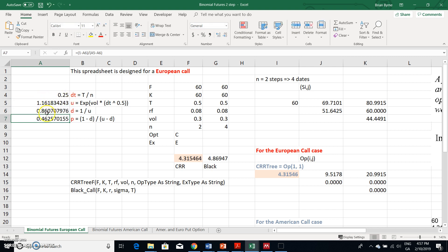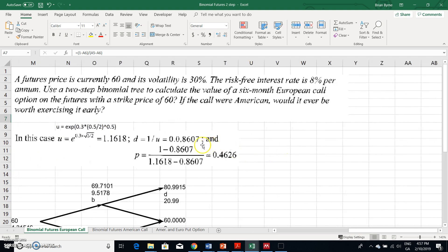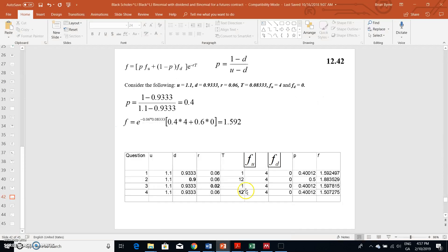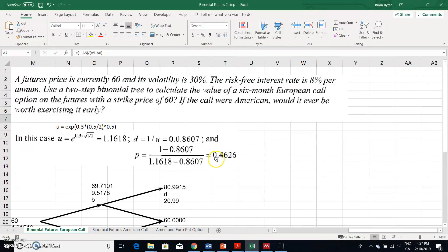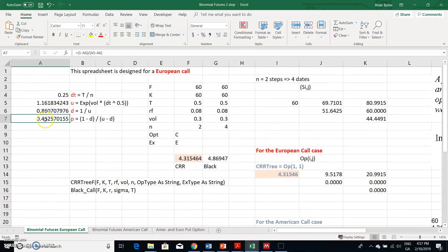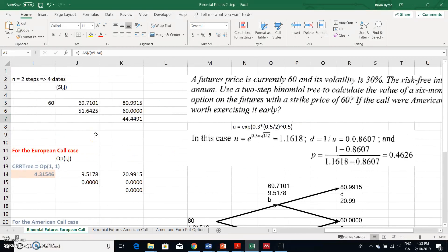Then p would be equal to 1 minus d over u minus d. Where are we taking that from? That's coming from before: p equals 1 minus d over u minus d. That's something we need to take note of. We have p here equal to 0.4626, and to verify that, I followed 1 minus d over u minus d, which gives us the 0.46 value.